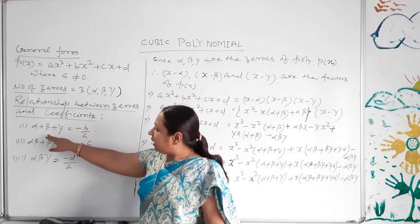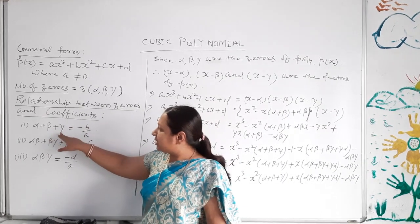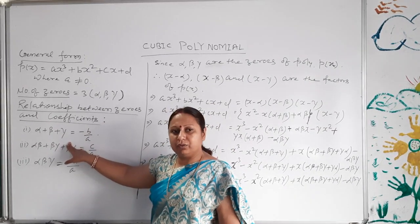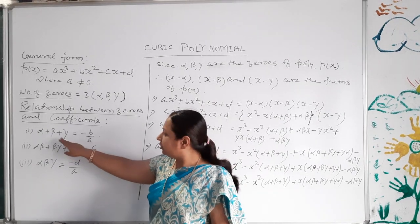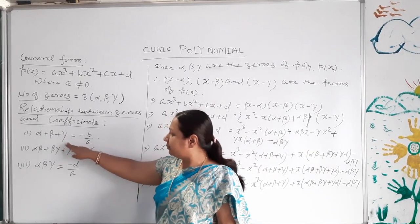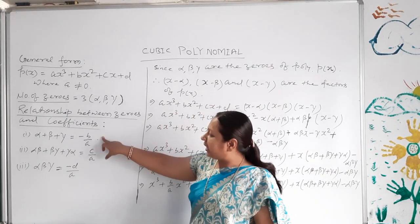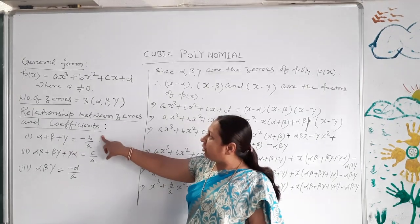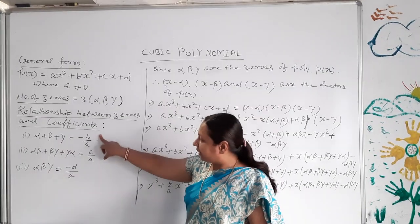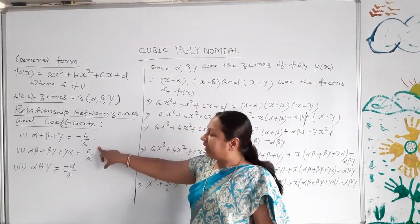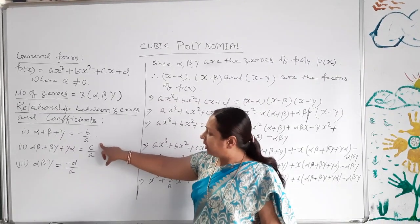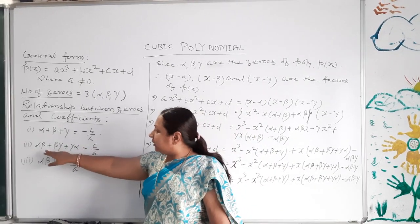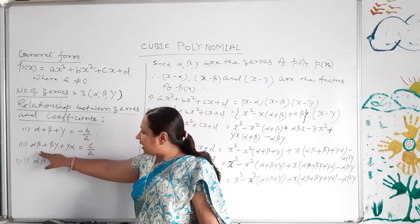The first relationship is the sum of the zeros: alpha plus beta plus gamma equals minus b by a, where b is the coefficient of x² and a is the coefficient of x³.